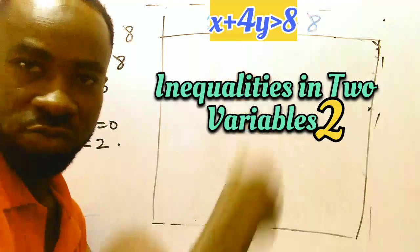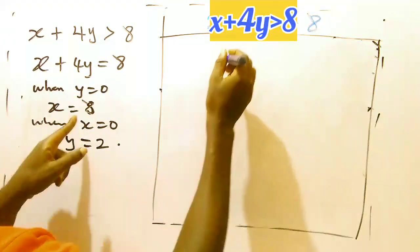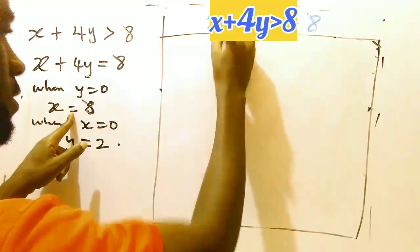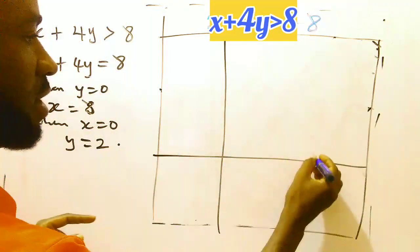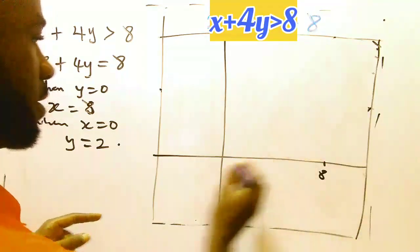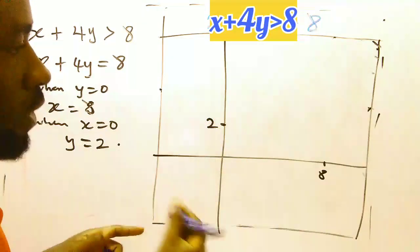So these two intercepts are what I'm going to use to plot this graph. Let me assume this is my 8 here, and then my y is 2. Let me assume here is my y equal to 2.